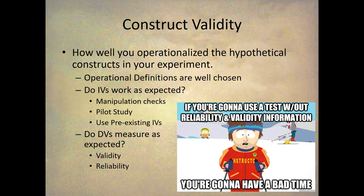Another way to check if the independent variable manipulation works is a pilot study. A pilot study is a small study before the major experiment to see if different parts are working. You give people the manipulation and then just the manipulation check without the dependent variable. Or the easiest way is to use pre-existing independent variables — ones that other researchers have already used. Always look at other studies and borrow their manipulations.